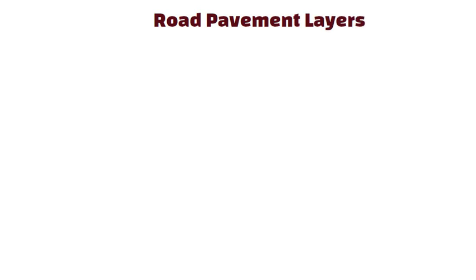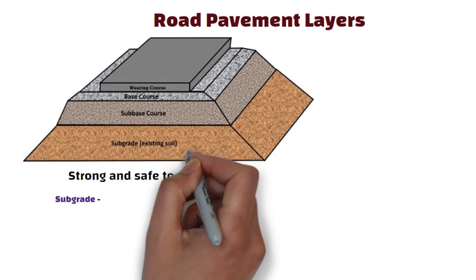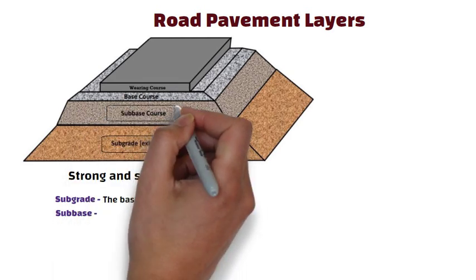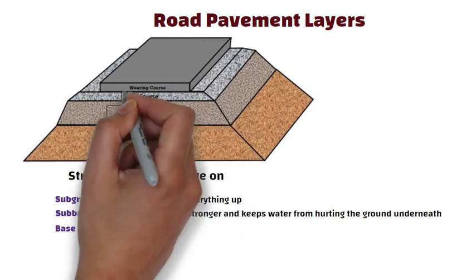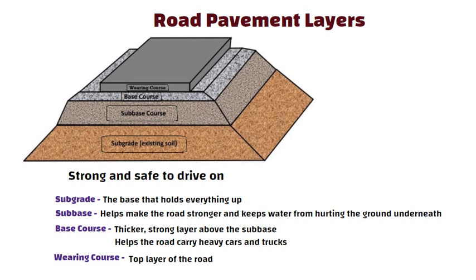Road pavement layers. A road is built with different layers to make it strong and safe to drive on. The layers are: Subgrade — this is the ground beneath the road, like the base that holds everything up. Subbase — this layer is on top of the subgrade and helps make the road stronger, keeping water from hurting the ground beneath. Base course — a thicker, strong layer above the subbase that helps the road carry heavy cars and trucks. Wearing course — this is the top layer, smooth and strong so cars can drive safely on it. Each layer helps the road stay strong and last a long time.